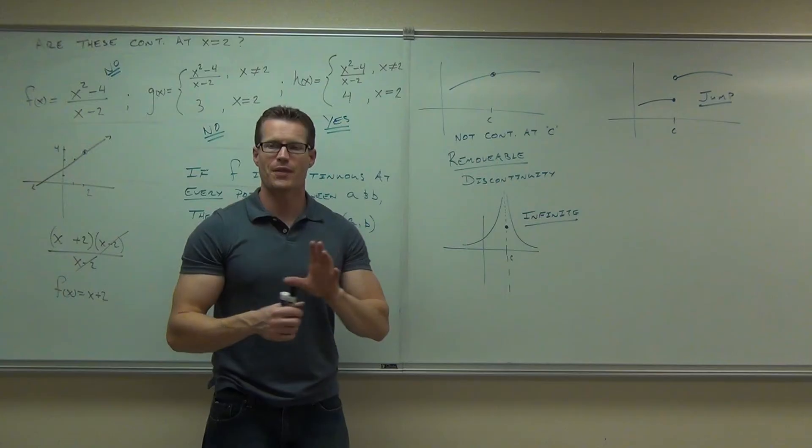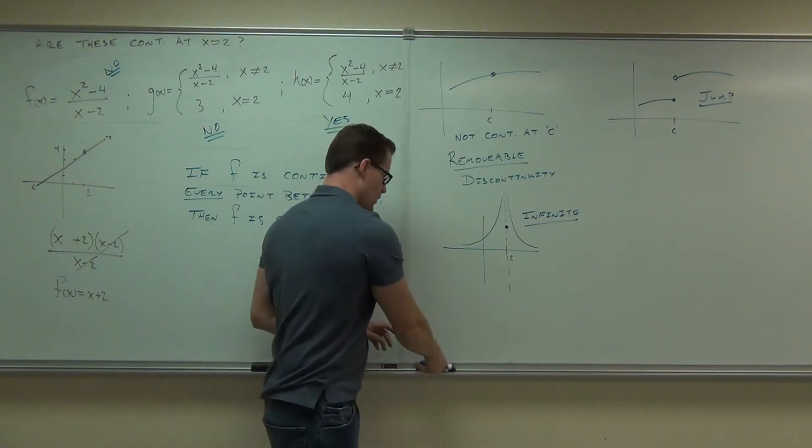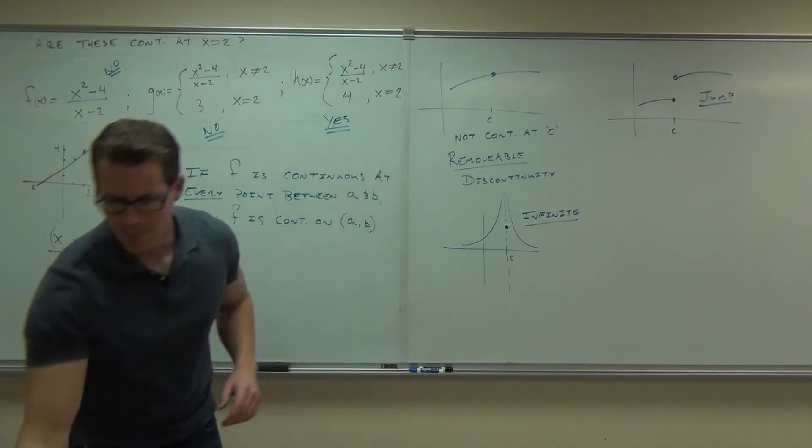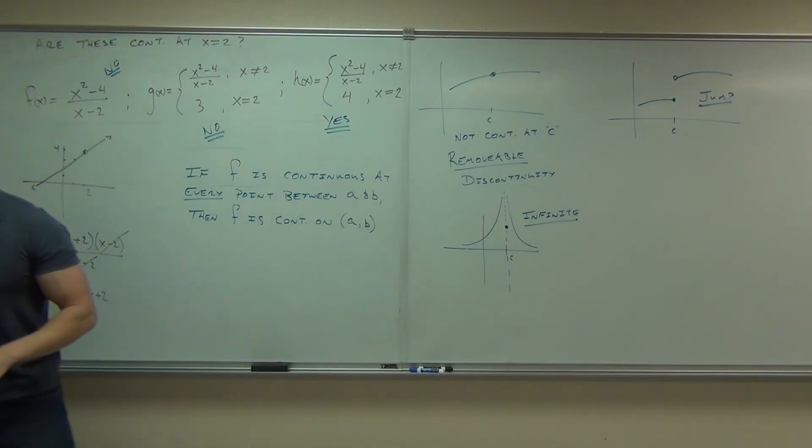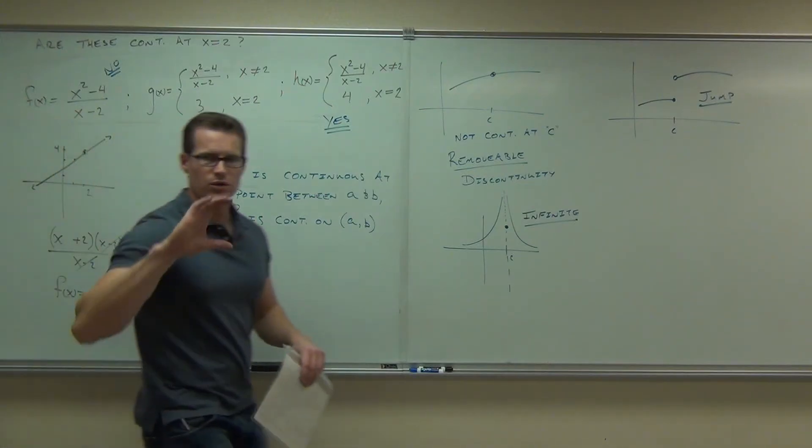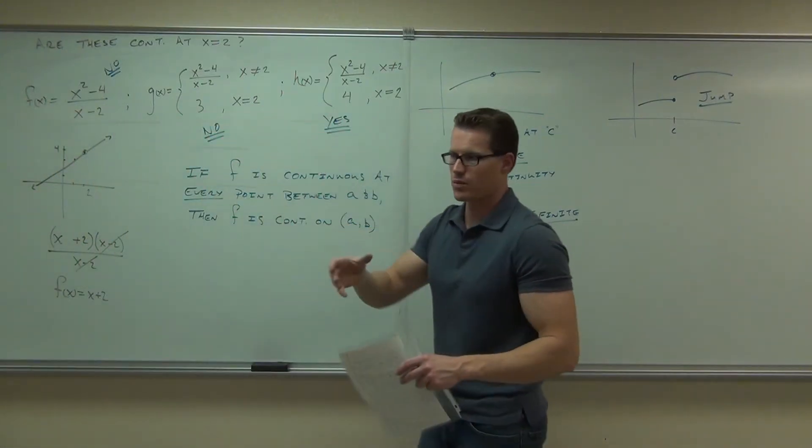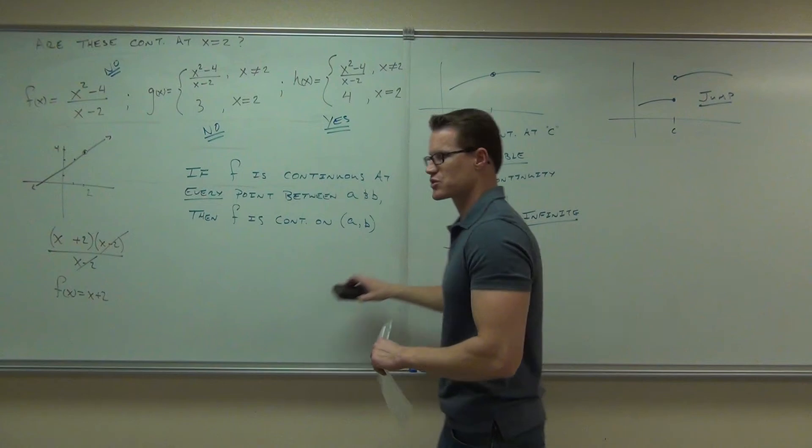We'd say it's continuous on the open interval. The question I have is, what about the endpoints? And we're going to look at that right now. So what would happen? Because right now, this is open, right? It's not including the a and the b. How can we determine whether or not to include those endpoints with brackets or whether we can't? And we'll look at that.